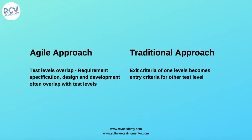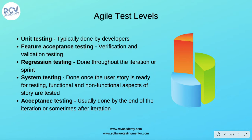During each agile iteration, several test levels occur. Unit testing is typically done by developers. Then there is feature acceptance testing, which comprises verification and validation. Feature verification testing involves testing against the user story acceptance criteria, and is often automated. It may be performed by developers, testers, or both, since in agile, quality is a collaborative responsibility of the whole team.